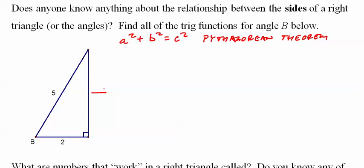But for this side here, we have to say that 2 squared plus, we'll call it X squared, equals 5 squared. X squared equals 25 minus 4. X squared equals 21. Square root of both sides, square root of 21.